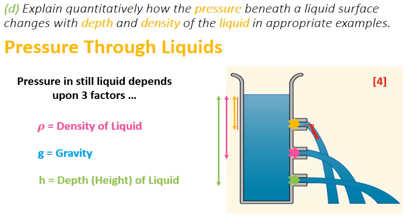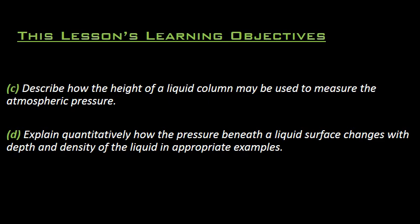Once we have established that density, gravity, and depth or height matter, we can say that the pressure through liquid depends upon rho g h. So this is the formula we have. Right at the bottom of the screen you can see, P equals rho g h. This is the formula which we will use in today's lesson.